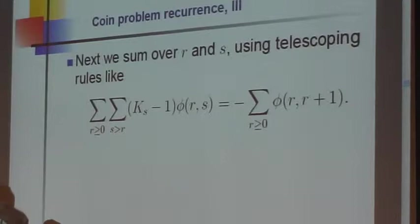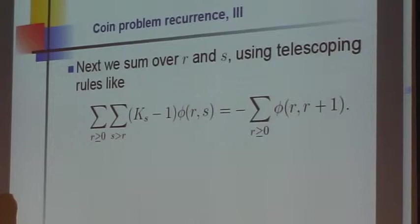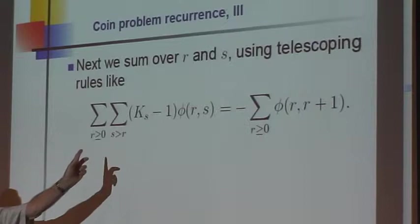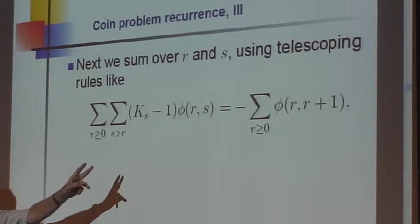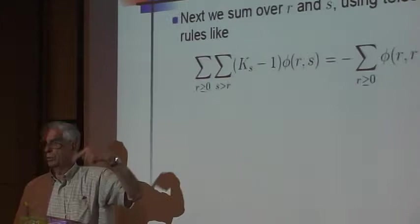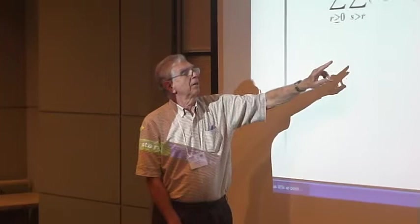When you sum over r and s, you find yourself summing over something like that. In the one-variable case, these sums usually turn out to be zero because the summands have compact support—they vanish outside of some interval, like n choose k vanishes outside the interval 0 to n, for instance.